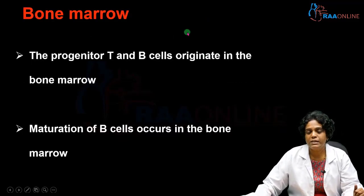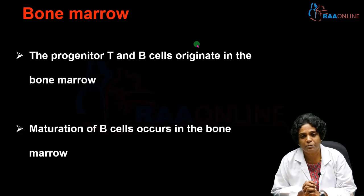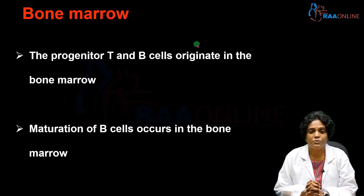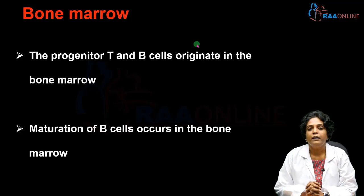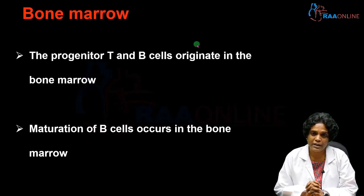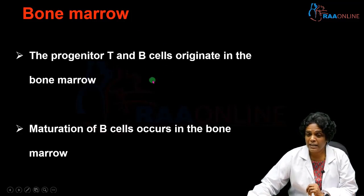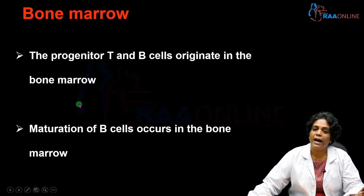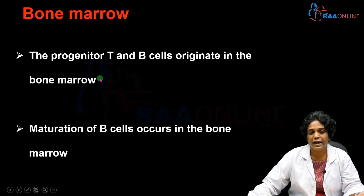The first lymphoid organ is the bone marrow. Bone marrow and thymus are called the central organs of the immune system because these are the two main lymphoid organs where lymphocytes develop and mature. Any defect in these two organs will impair the immune response. Both progenitor T cells and B cells originate in the bone marrow. B cell maturation happens in the bone marrow, whereas T cell maturation happens in the thymus — T cells migrate from the bone marrow to the thymus to mature.